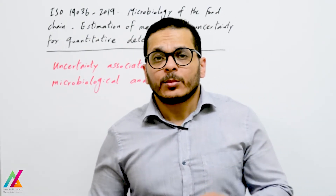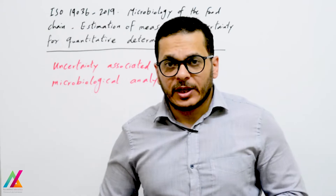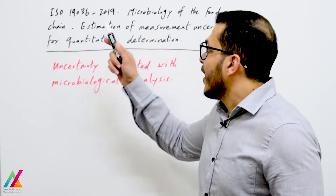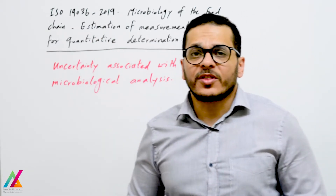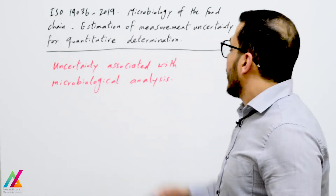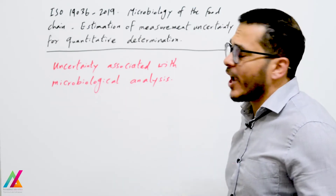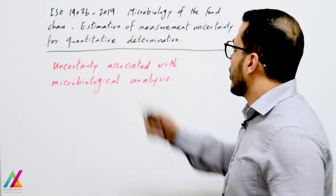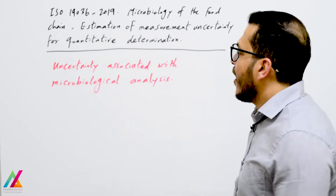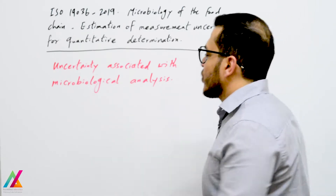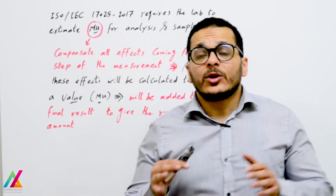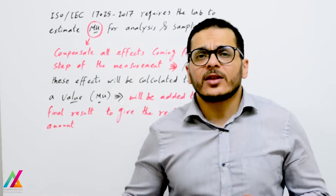Different guidelines will be used in this training course, but the most common guideline is ISO 19036:2019 — Microbiology of the Food Chain: Estimation of Measurement Uncertainty for Quantitative Determination — covering uncertainty associated with microbiological analysis.